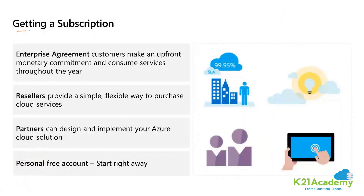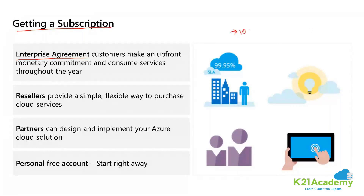First, there is something called an Enterprise Agreement subscription — EA subscription. If you have a high requirement, deploying multiple servers on Azure, or the requirement is large, you can directly contact Microsoft. Tell them your requirements and that you can pay some money upfront — say $10,000 USD — and that you're going to use Azure for the next few years. Azure will then provide you subscriptions specifically called EA subscriptions, add credits, and give you discounts because you are making upfront commitments.